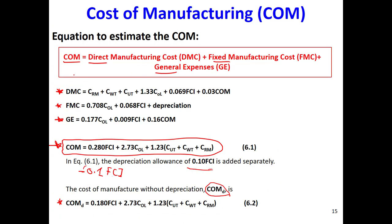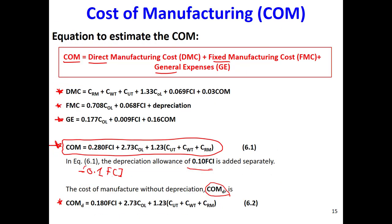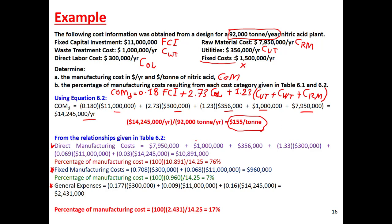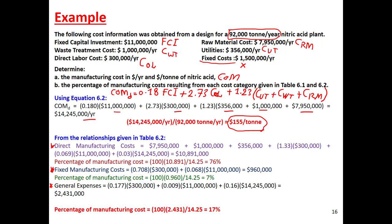Next, the question asks to find each cost category: direct, fixed, and general manufacturing costs. For each category we use a specific equation. We already calculated the total cost of manufacturing at approximately 14 million dollars. We do not consider depreciation here.